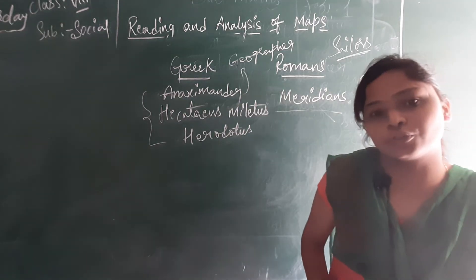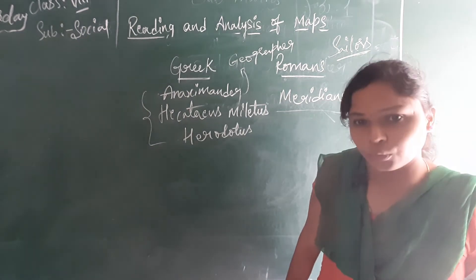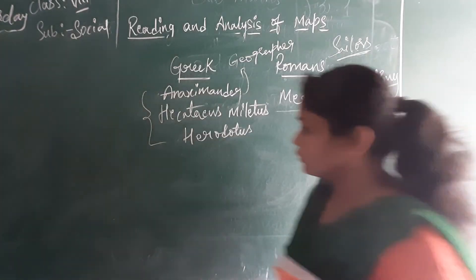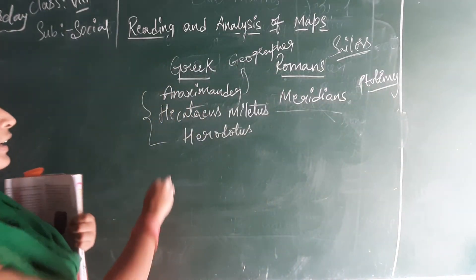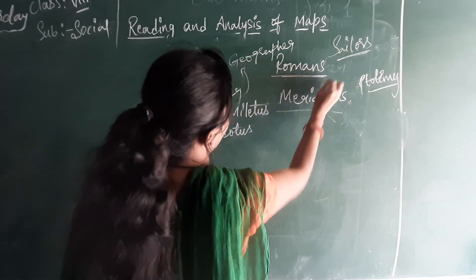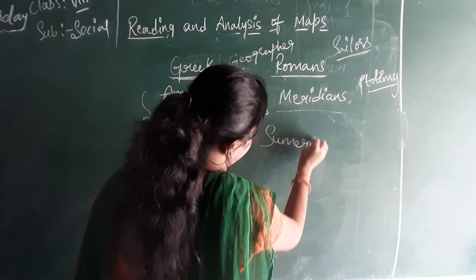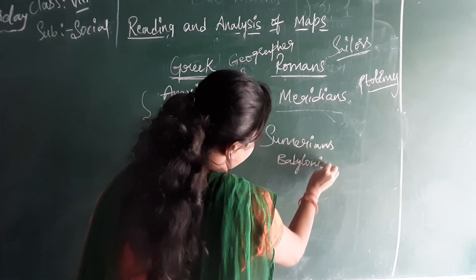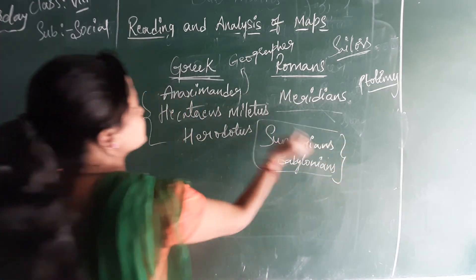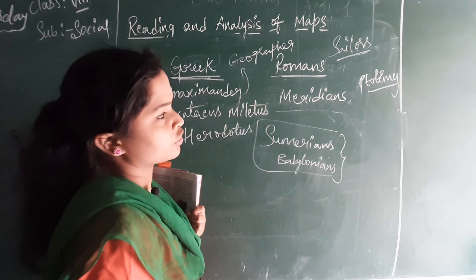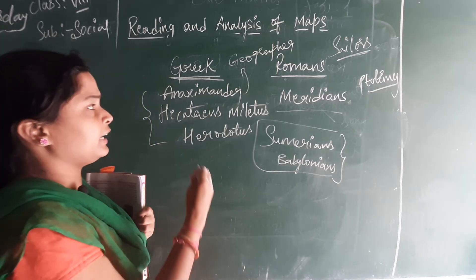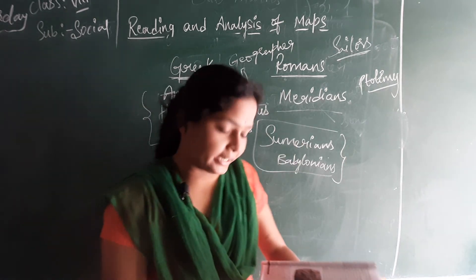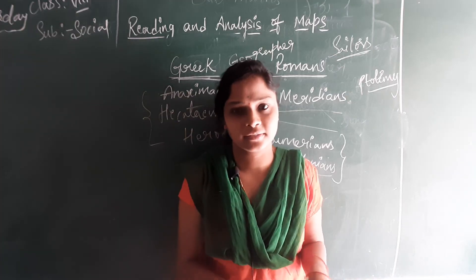Latitudes and longitudes will help us to locate the places and to help us with timings also. These people, along with the Sumerians and Babylonians, and then the Greek and Roman people who also started sailing, learned about the maps. The next part I will continue in the next class. Thank you.